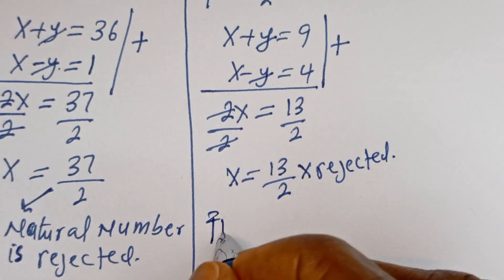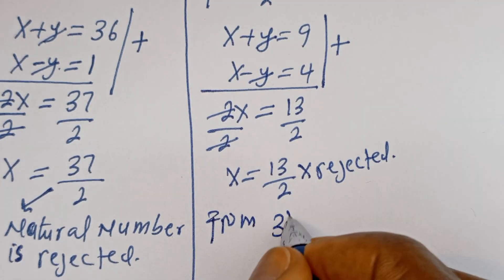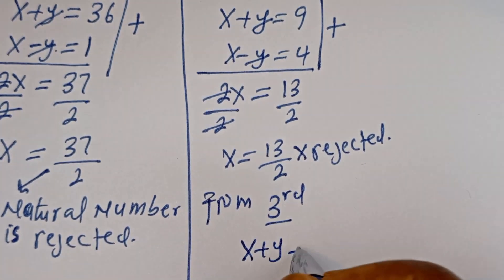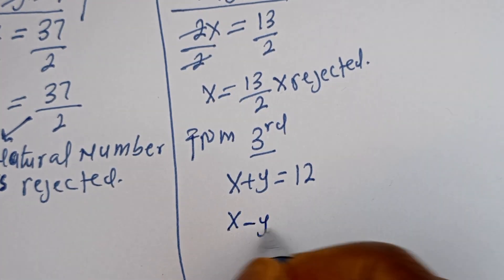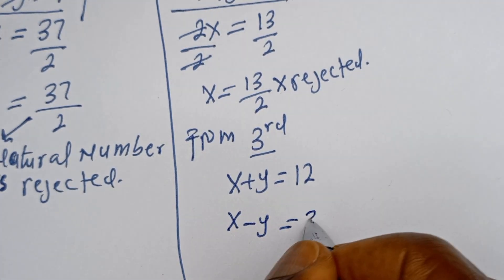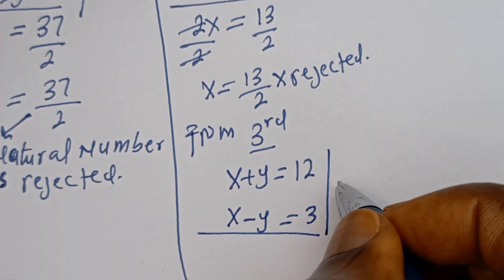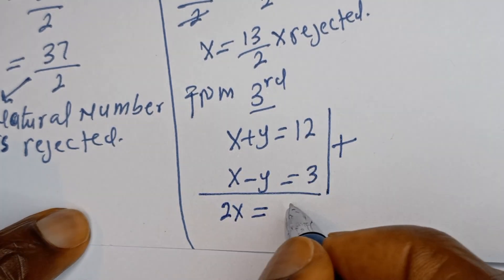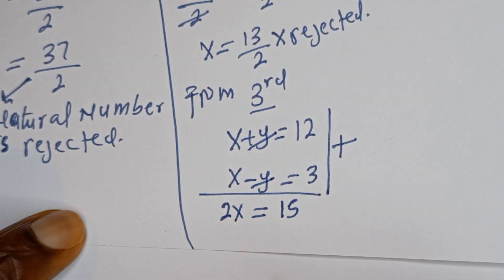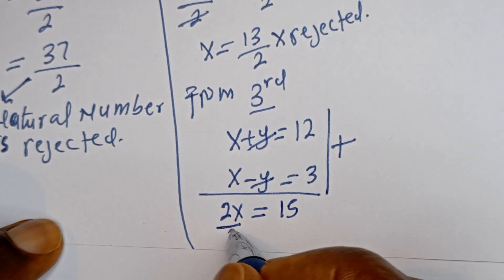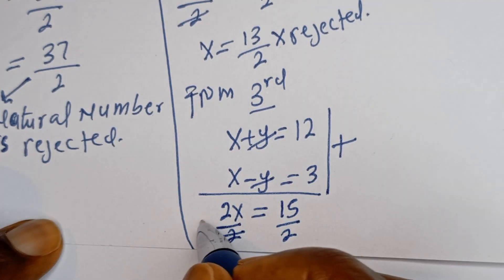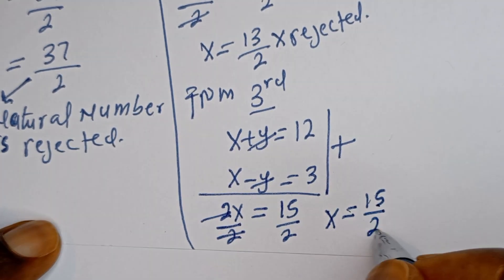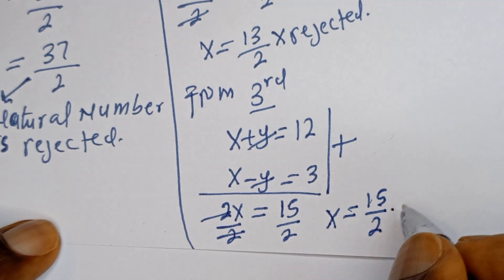Now from the third case: x plus y is equal to 12, and x minus y is equal to 3. Adding them together, 2x is equal to 15, so x is equal to 15 divided by 2. This is also not a natural number, so this is rejected.